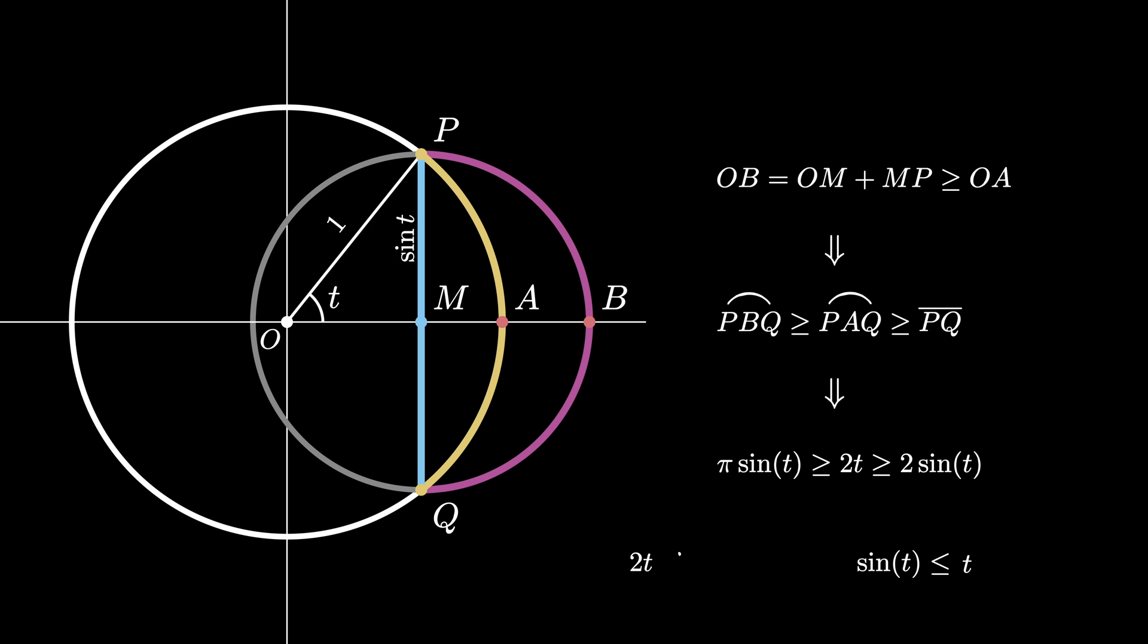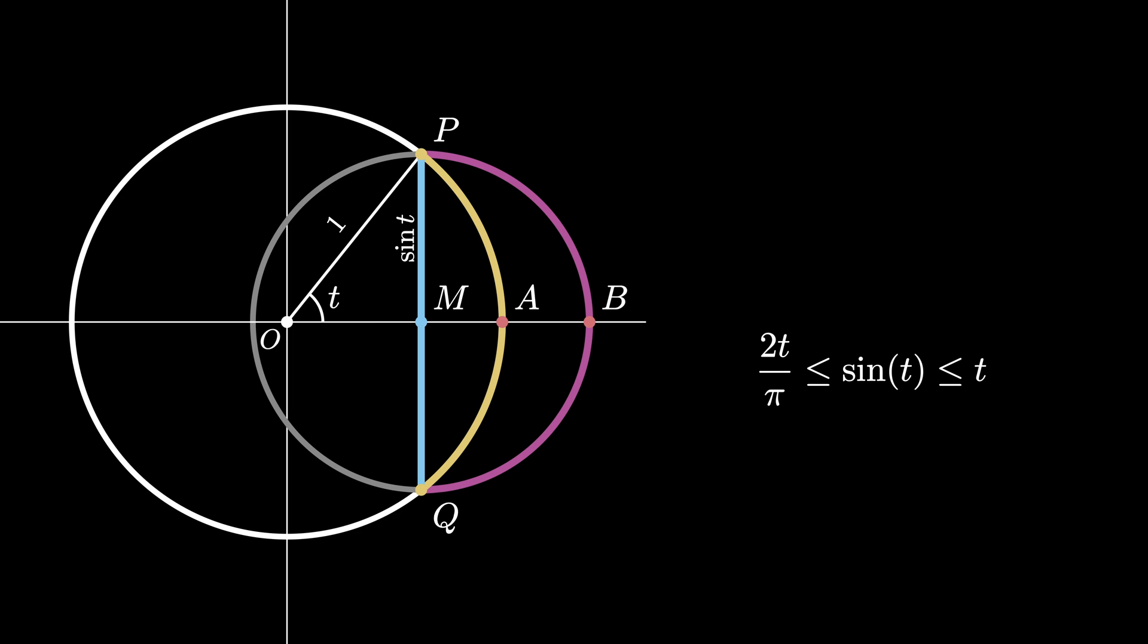From the first inequality, we see that 2 times T is less than or equal to pi times the sine of T, so that 2T divided by pi is less than or equal to sine of T. When we glue these two together, we see that 2T over pi is less than or equal to sine of T, which is less than or equal to T.